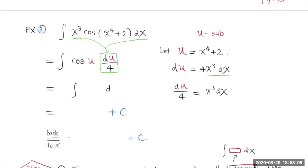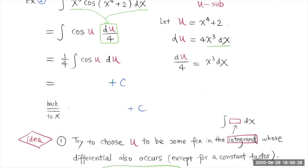This is going to become an integration with respect to u. Now this 1 over 4 is a constant multiple — we put it in front. We'll have 1 over 4 times this integral. We know the antiderivative of cosine u with respect to u is sine u. So this becomes (1/4) sine u, and don't forget to add the constant.